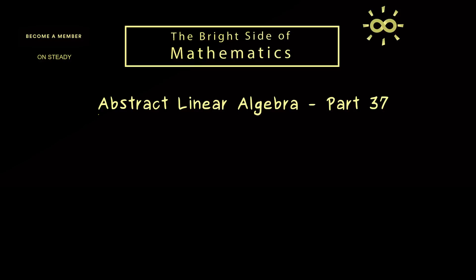Hello and welcome back to Abstract Linear Algebra, the video series where we extend our linear algebra knowledge to general vector spaces. We already found out that general linear maps can still be represented by matrices, and for a lot of applications the best matrix representation is given by the so-called Jordan normal form.